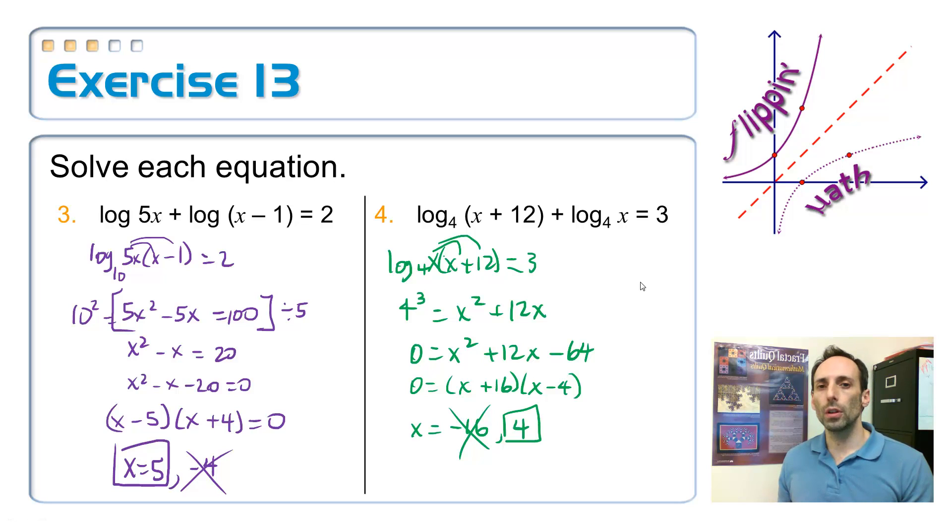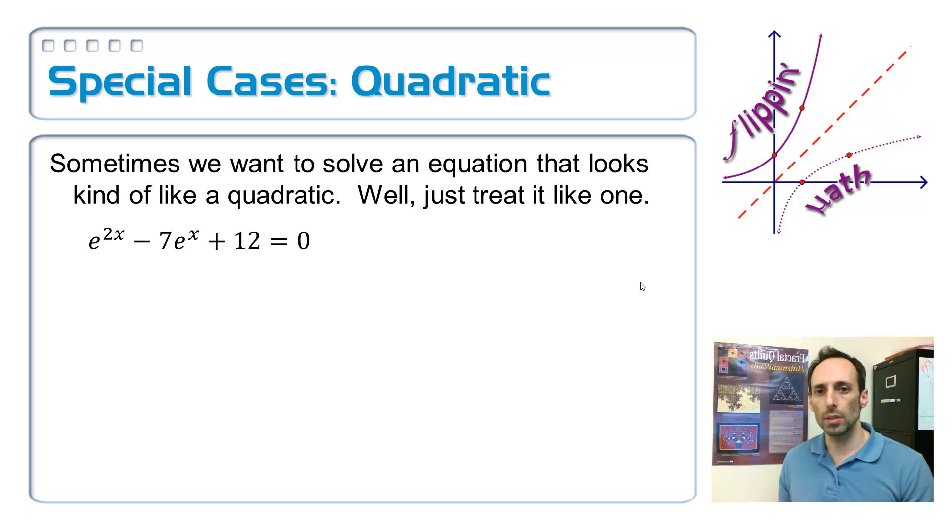So what's going to follow here are some special cases. So here is a special case that looks like a quadratic. And we've done something similar to this whenever we had, say, rational roots. You're going to do a substitution to make it definitely look like a quadratic equation. So for example, I have e to the 2x minus 7 times e to the x plus 12 equals 0. We're going to do a k substitution and let k equal just e to the x, just like so.